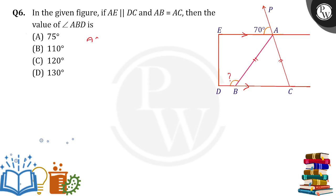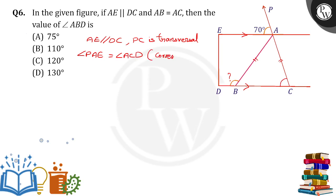It is given that AE is drawn parallel to DC, and I am going to take PC as the transversal. When PC is the transversal, angle PAE is equal to angle ACD because they both are corresponding angles. So angle ACD is equal to 70 degrees.